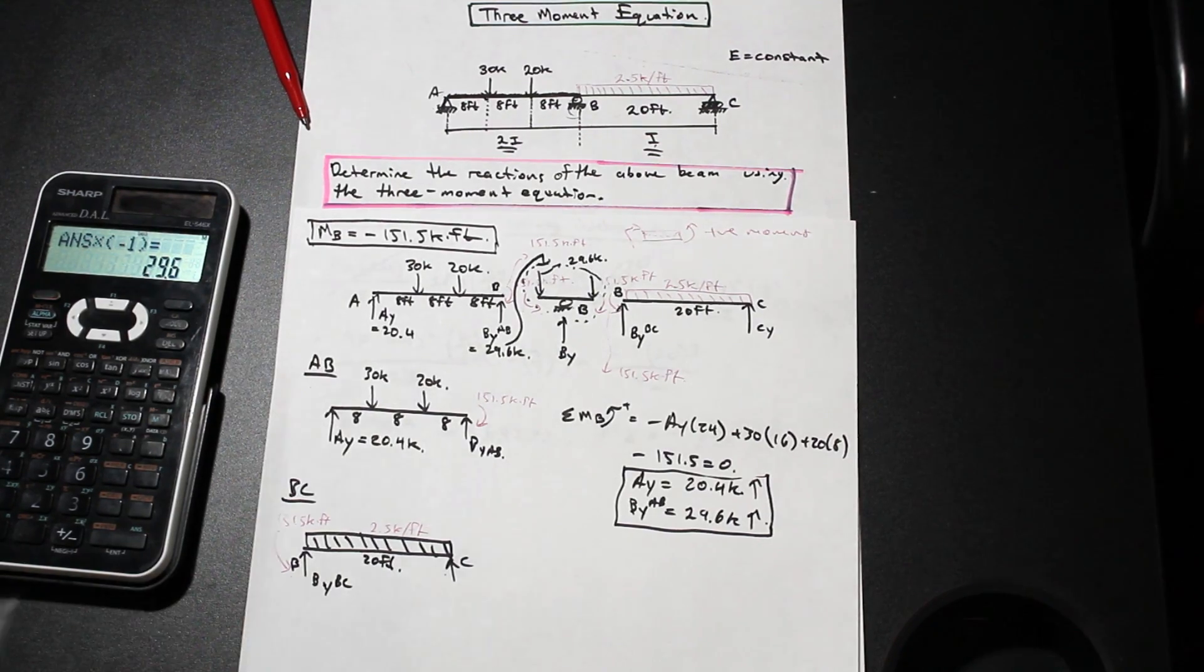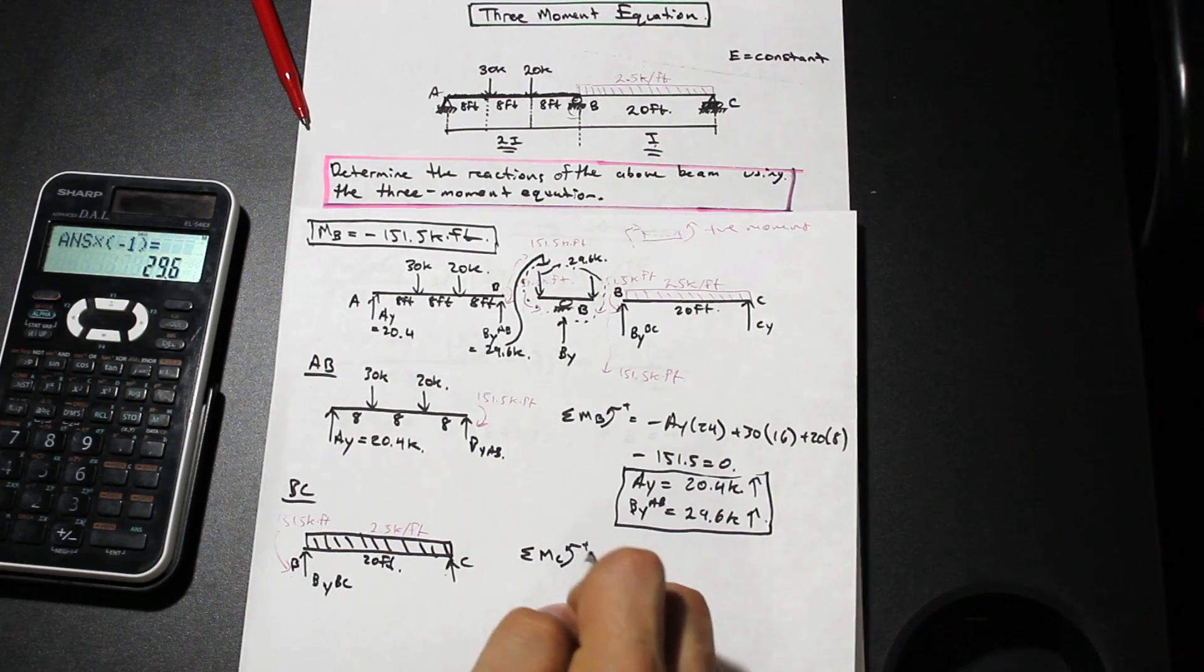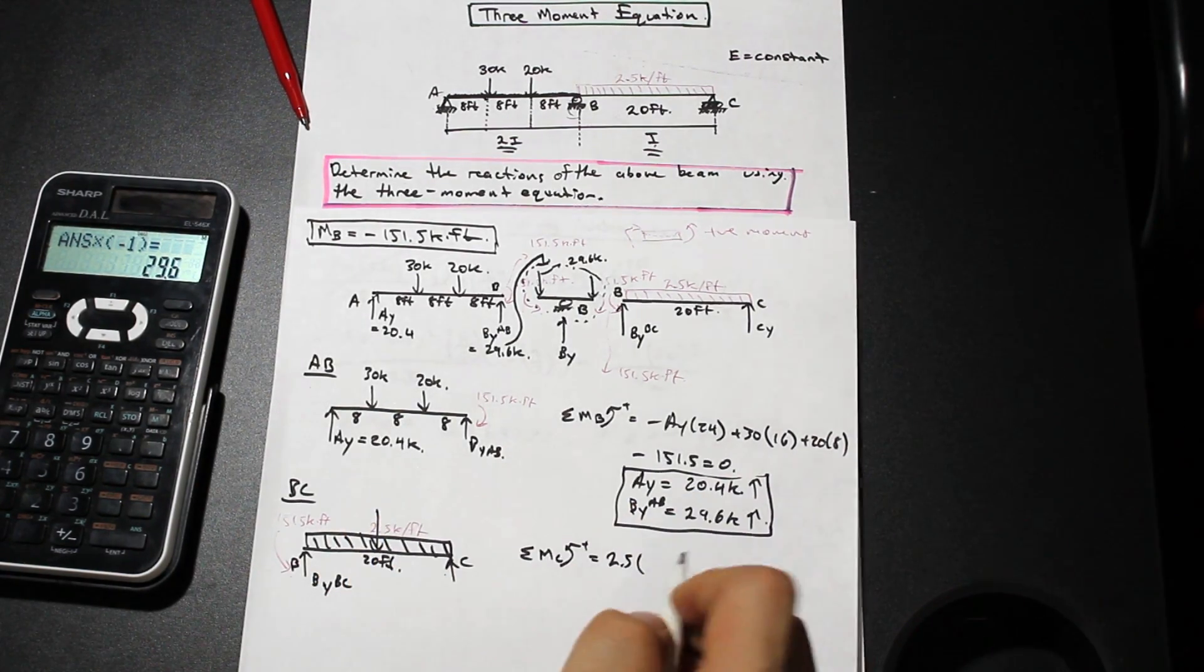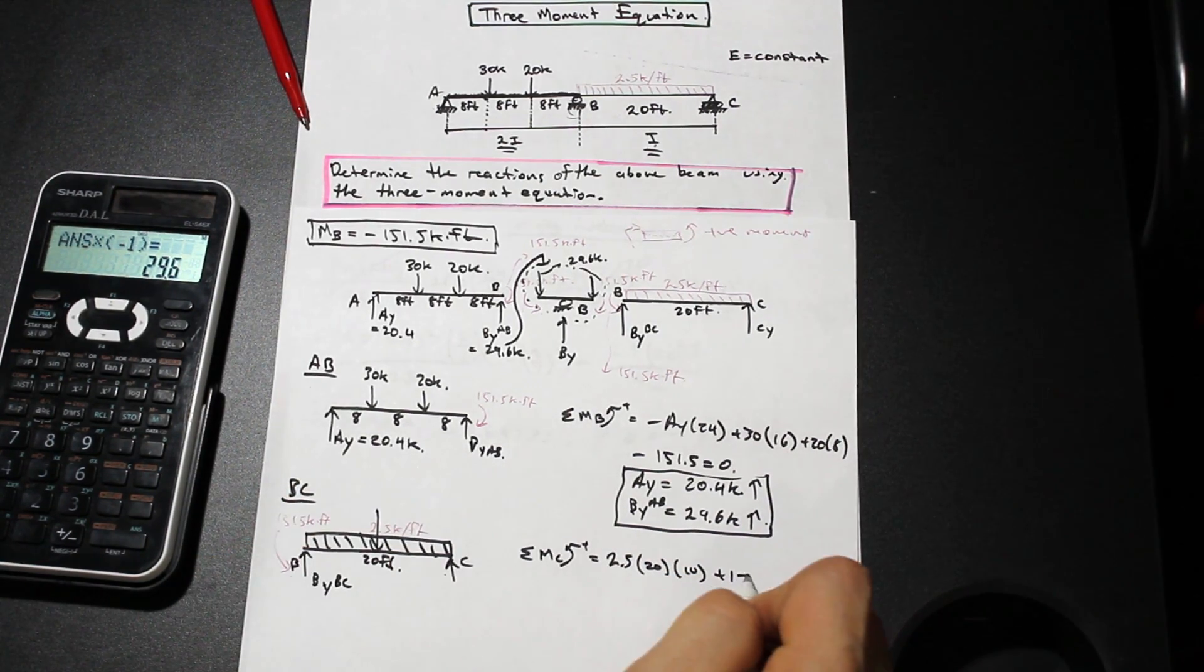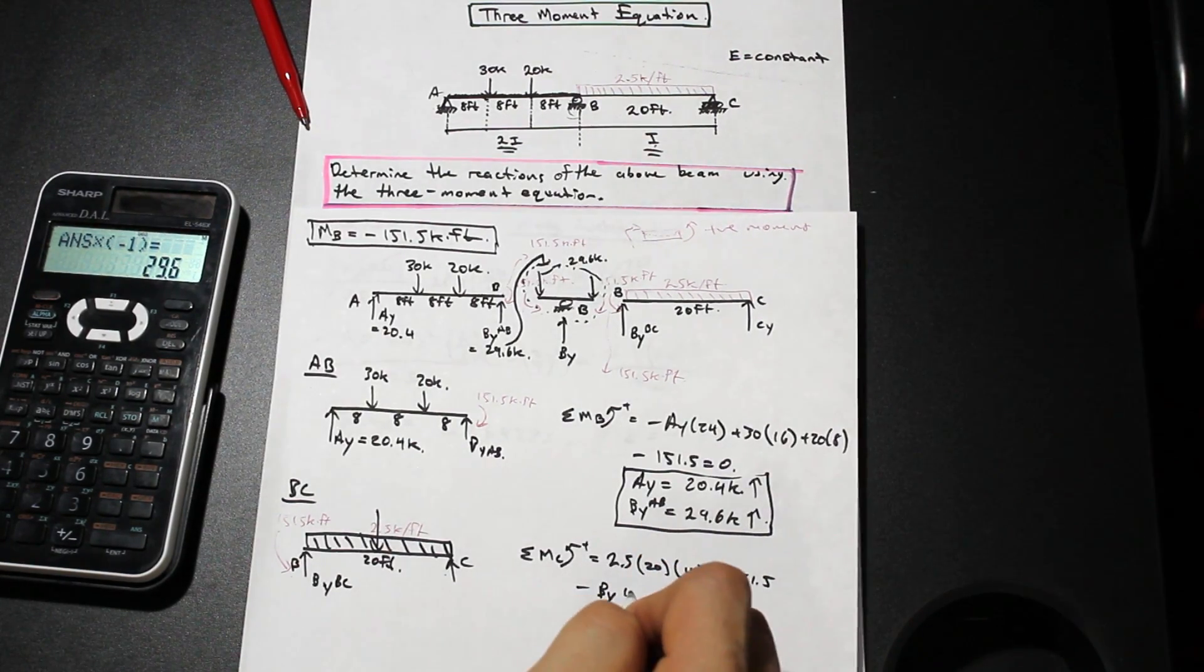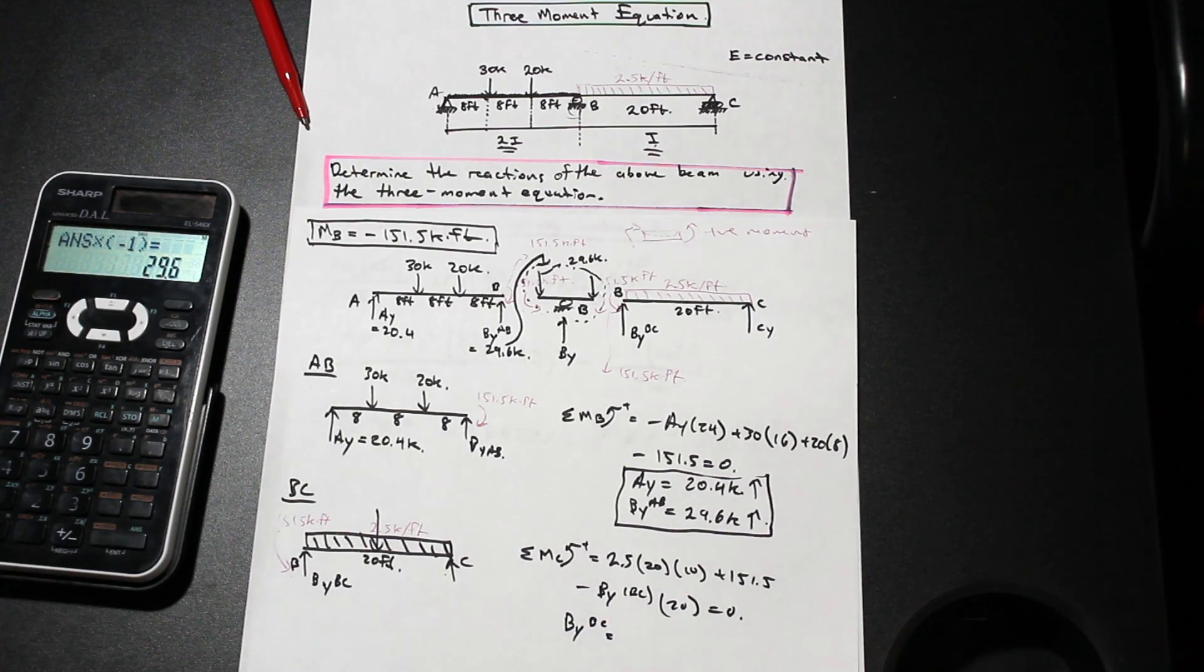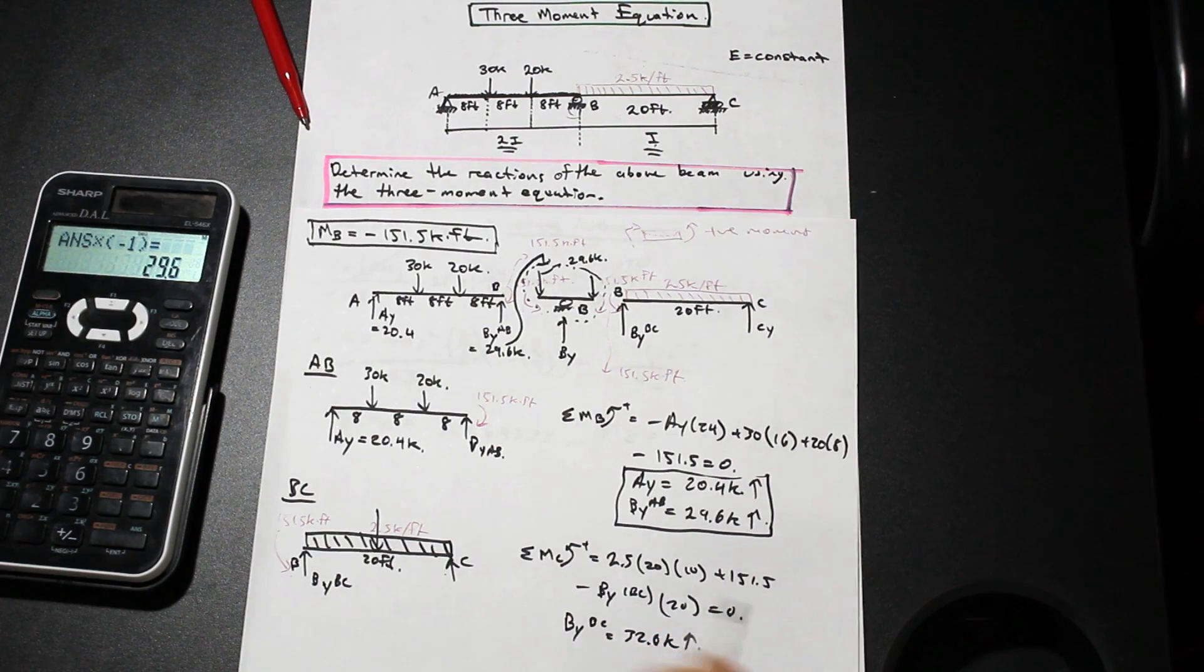Like we did before, you can take the moment about B, you can take the moment about C, either one will work. Let's take the moment about C this time. If we take a moment about C we're going to have 2.5 times the distance, so we're going to resolve this into a force times 20 times half of that which is 10. We have a positive moment this time of 151.5 according to our sign convention and we have minus BYBC times 20, that's equal to zero. So BYBC is equal to 32.6 kip up.